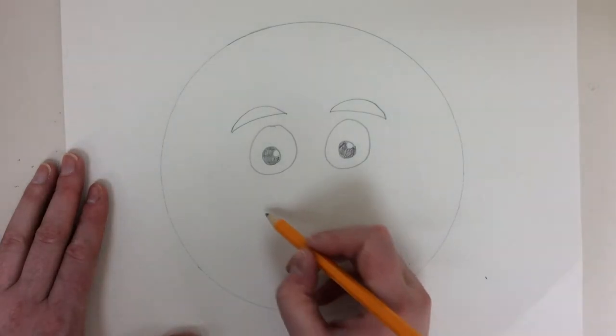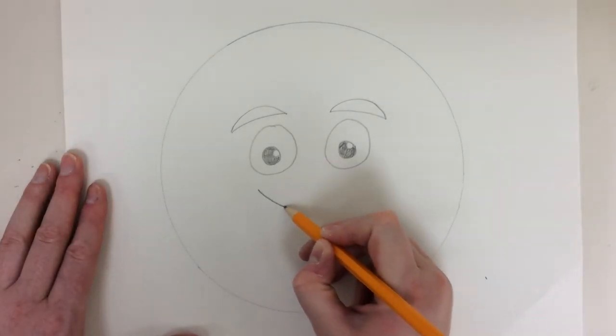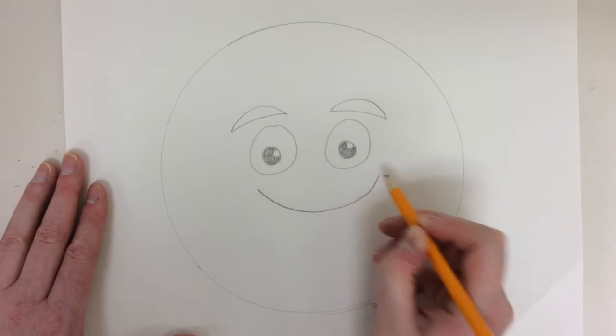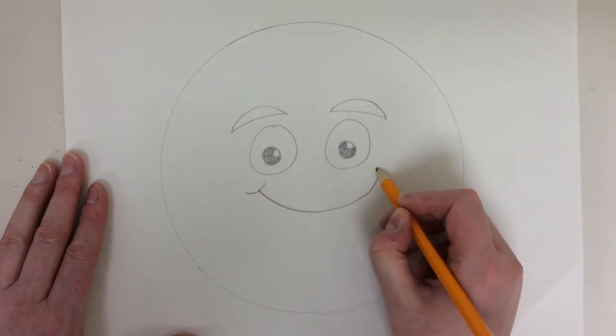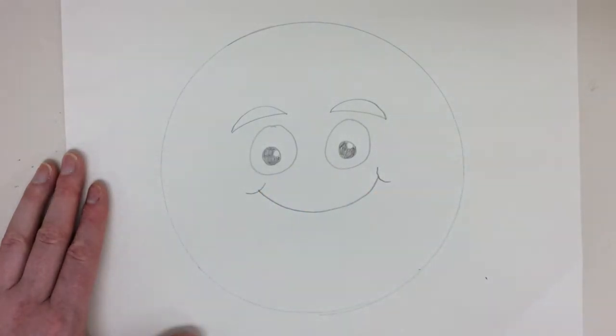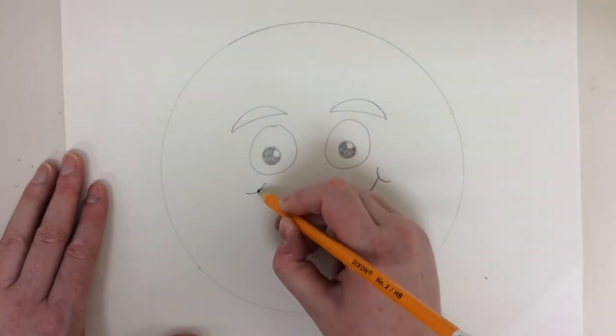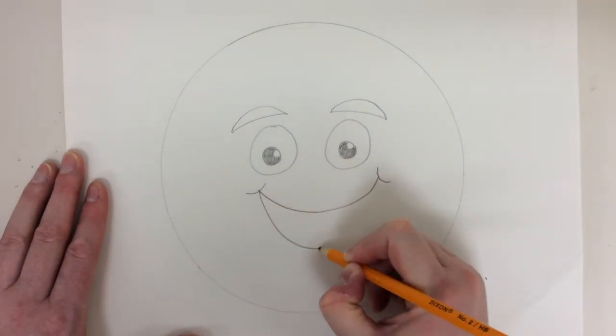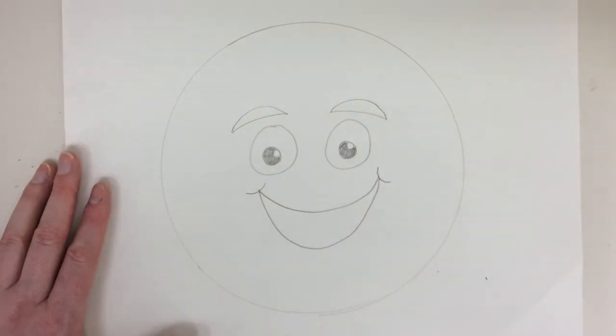Now I'm going to give him a smile. So I'm going to make a curved line and some curved lines on the side. That's his smile but I want his mouth to be open. So I'm going to make another curved line that goes down below that. Now his mouth is open. Well, that was easy.